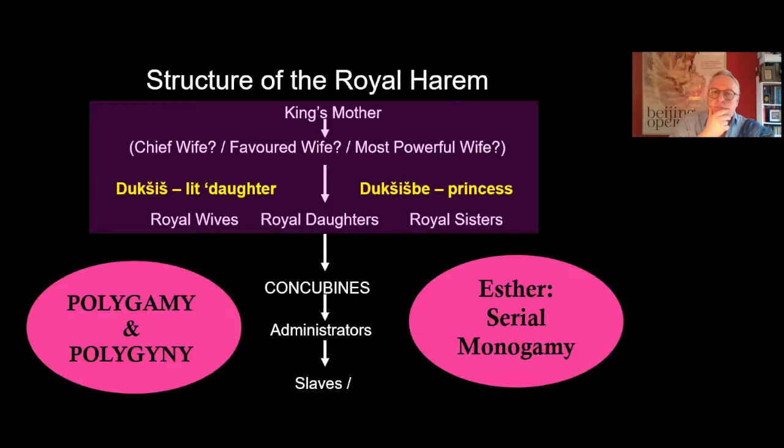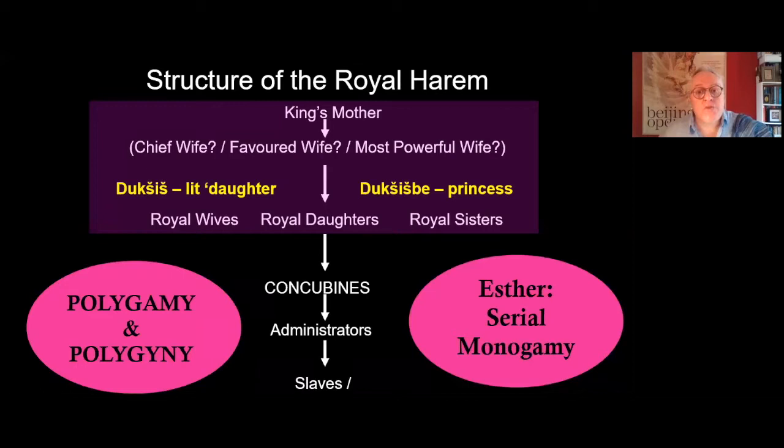The structure of the royal Harim in Persia is quite complex. We need to remember that in Persian society, kings and nobles were polygamous and polygynous — that is to say, they could marry many women, but they could also keep other women as part of their household: concubines, female administrators, female slaves, all of whom were sexually available to the kings or the nobles.